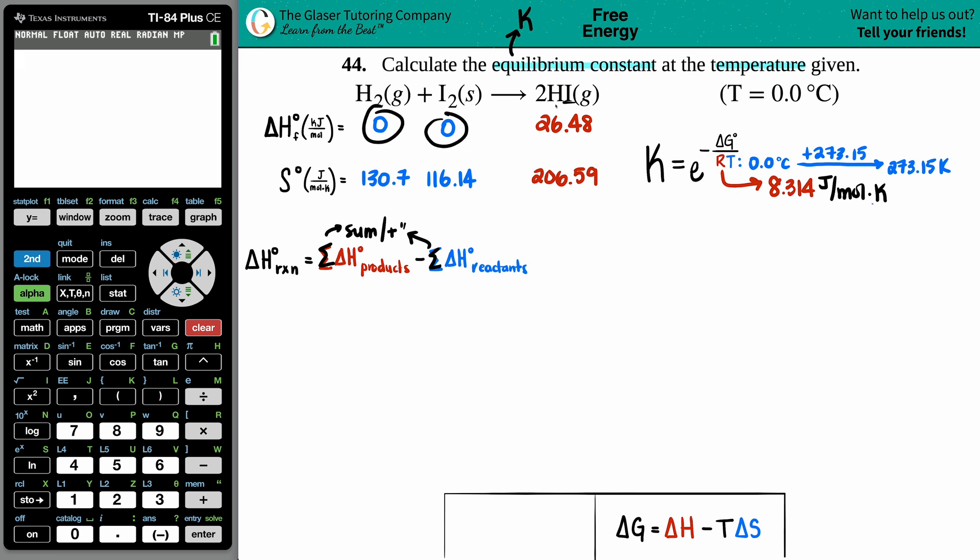Let's work with delta H first. Delta H, we have to find out the whole delta H for the entire reaction. If we grab the delta H values for each component from the back of the book, we could use this formula: delta H for the whole entire reaction equals the sum of all the delta H's of the products minus the sum of all of the delta H's for the reactants.